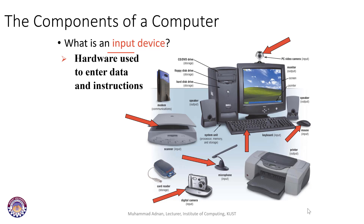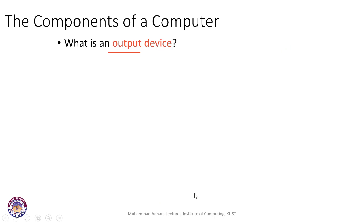The data given through input devices can be in the form of text, video, pictures, instructions, or voice. For a scanner, the data can be a document which you scan and give to your computer as a picture. A digital camera can take a picture and give it to the computer system. All these devices are input devices because they provide information to the computer system for processing.